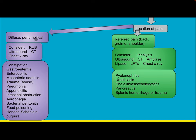If pain is diffuse or periumbilical, consider KUB, ultrasound, CT, and chest X-ray. Differential diagnosis includes constipation, gastroenteritis, enterocolitis, mesenteric adenitis, trauma, child abuse, pneumonia, appendicitis, intestinal obstruction, aerophagia, bacterial peritonitis, food poisoning, and Henoch-Schönlein Purpura.